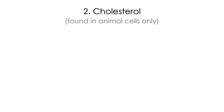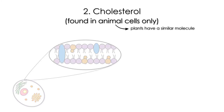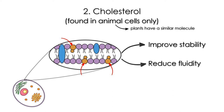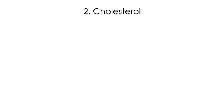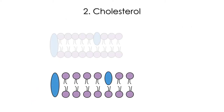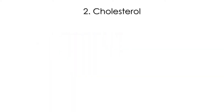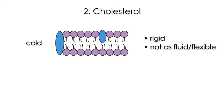Second, we have the cholesterol molecules. They are found in animal cells only, embedded in the membrane, and function to improve stability and reduce fluidity. The cholesterol holds the phospholipids together so that they don't separate too far or compact too tightly. Without cholesterol, the phospholipids in your cell will start to get closer together when exposed to cold, making it more difficult for small molecules like gas to squeeze in between the phospholipids, like they normally do.